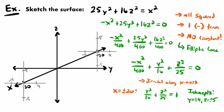Now let's draw our ellipses by connecting all the intercepts in both planes. With our two ellipses drawn, we finish this sketch of the elliptic cone by drawing lines from the ellipses that cross through the origin. This is an elliptic cone centered at the origin because we just have x², y², and z² without any numbers added or subtracted. So the two cones will meet at the origin.